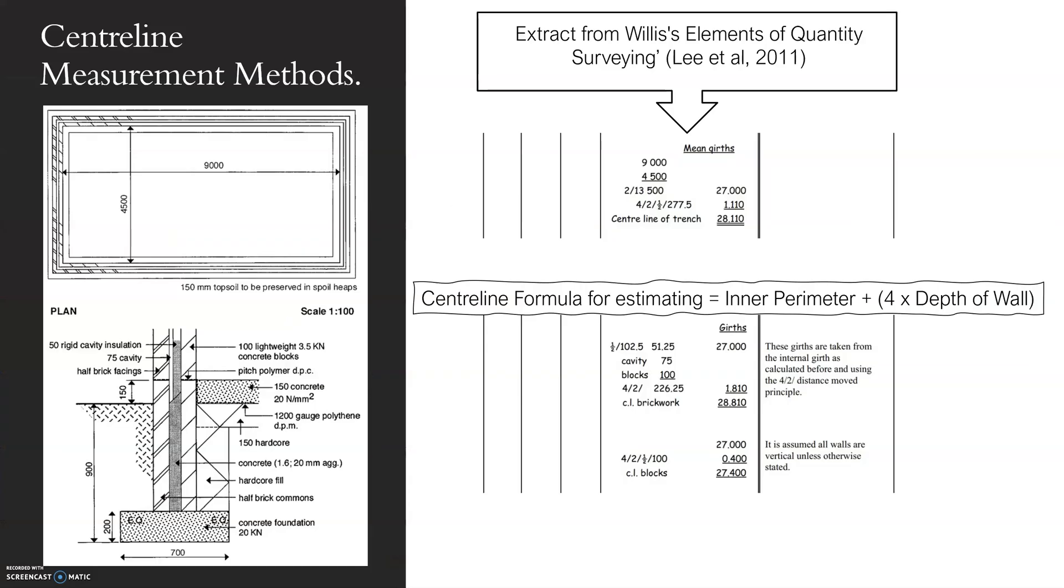Hi there. Looking at measurement and finance, specifically centreline measurement methods. Willis' Elements of Quantity Surveying has set out how it's supposed to look in dimension paper. This is my calculations.